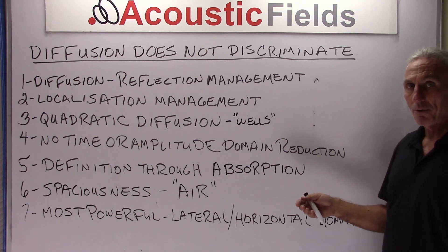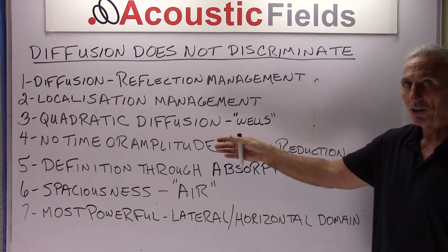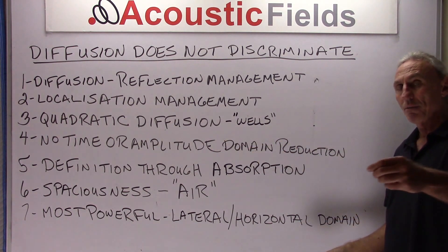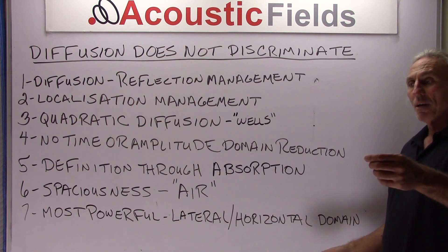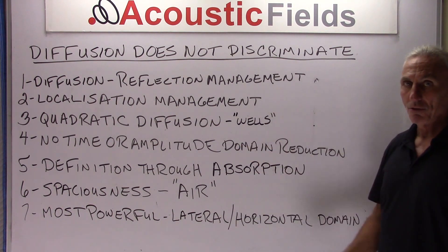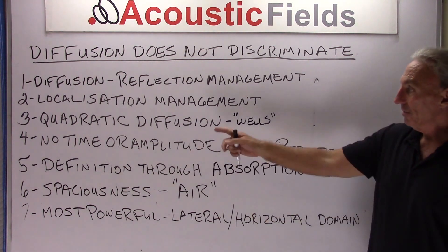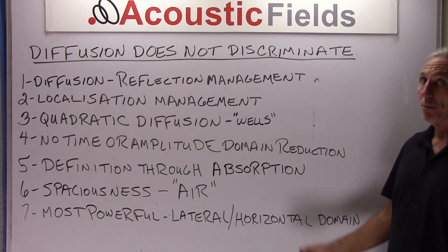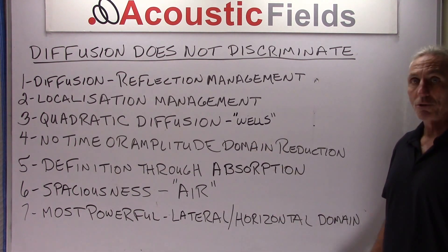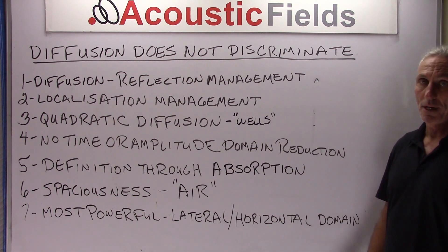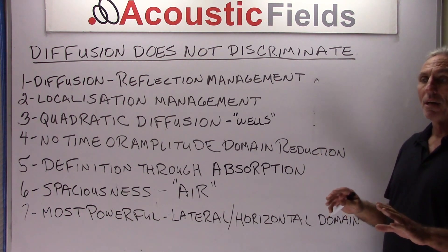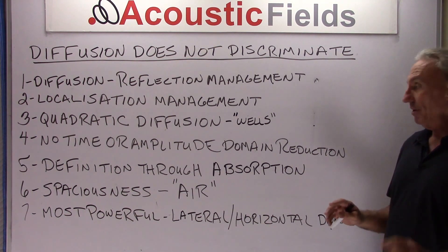The beautiful thing about quadratic diffusion is there's no reduction in time or amplitude of the signal. When the energy — the reflection — enters the diffuser, it's going to come back into your listening position with no reduction in time. It won't be slower, it won't be behind the original signal, and there are no strength or amplitude differences. So it's nice and smooth, nice and even, and properly placed, you don't even know it's there.